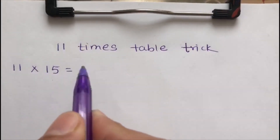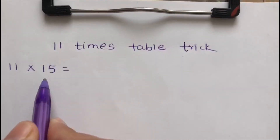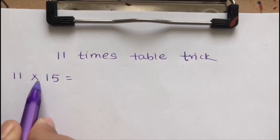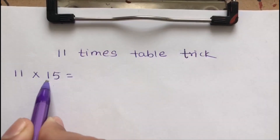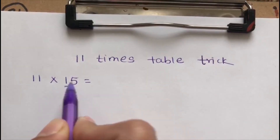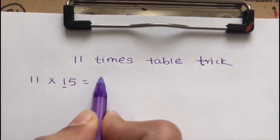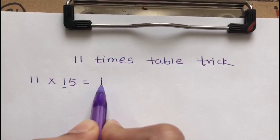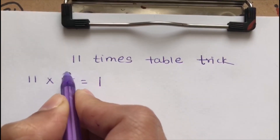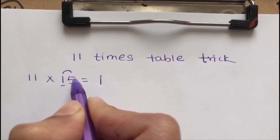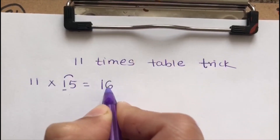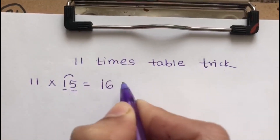Let's see how this trick works. So 11 times 15: the first digit is 1, so I write 1 here. Then I add these two digits, 1 and 5, which gives 6, so I write 6 here.